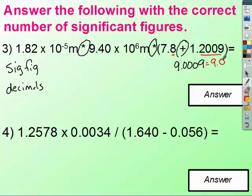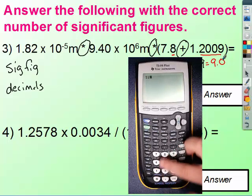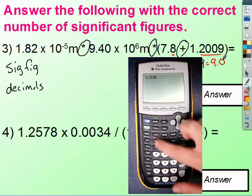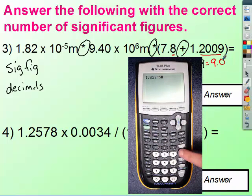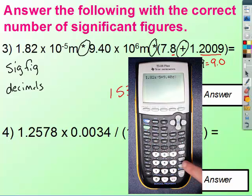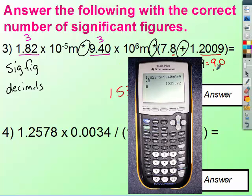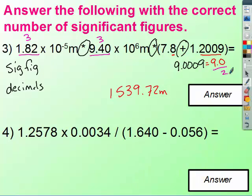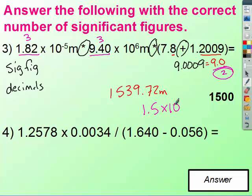Now I can plug it all into the calculator. So on this next one we have 1.82 times 10 to the negative 5th times 9.40 times 10 to the 6th times 9.0. Enter. 1,539.72. So our answer has to have 2. So we get 1,500. Or you could have said 1.5 times 10 to the 3rd. Either one of those would have been fine.